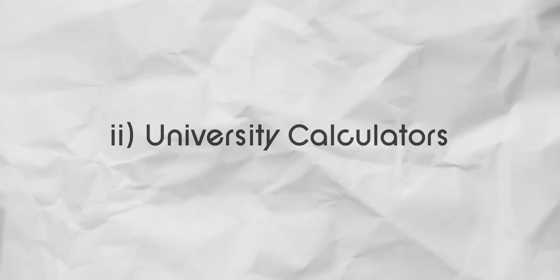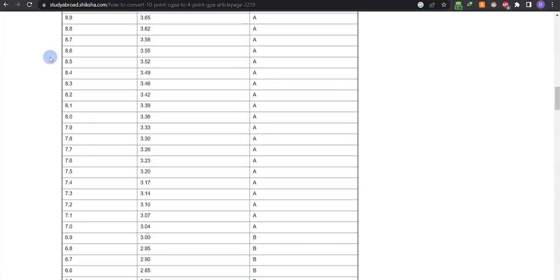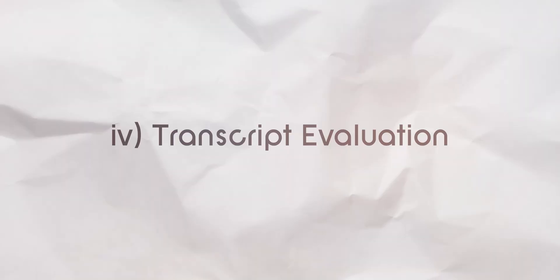Next, university-specific calculators. If your university gave you any specific website for conversion, then go to that website and convert your 10-point scale GPA into 4-point. Suppose your university did not give any website for calculation, then go on Google and convert from any website. This conversion is not exactly accurate on any of the websites, so I suggest taking an average by considering 2-3 websites.